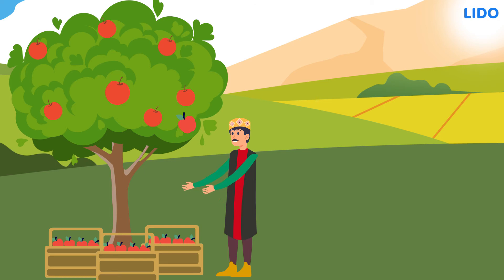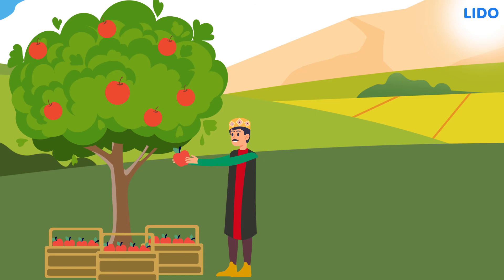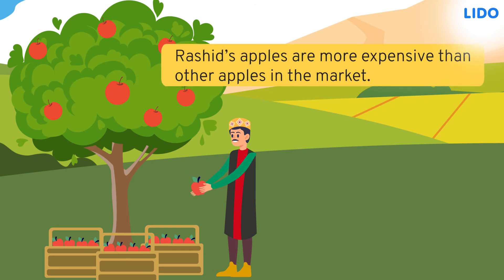Rashid is picking some more apples carefully. He takes good care of them. That is why Rashid's apples are more expensive than other apples in the market. 'Expensive' is an adjective — it has three syllables. In this sentence, we compare how expensive the apples are, that is why 'more' is used.